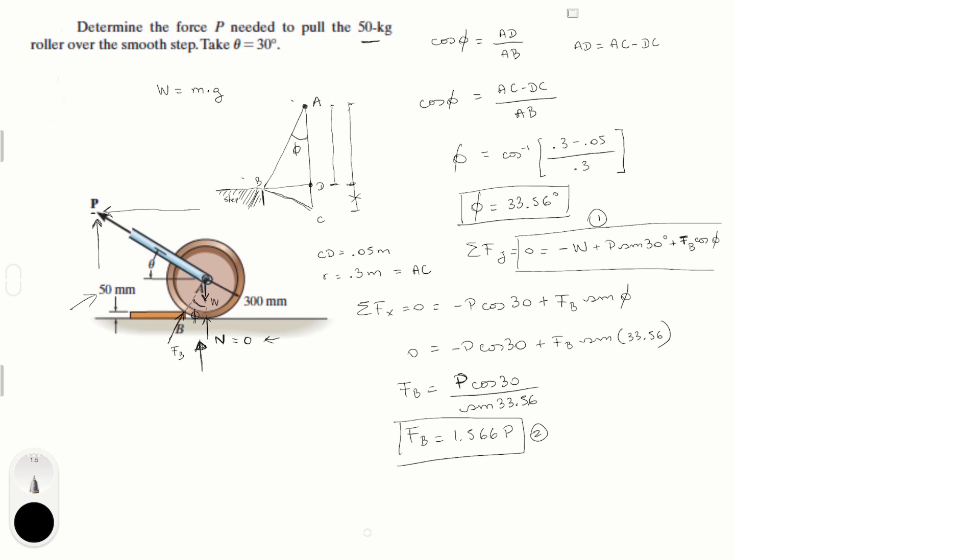This is pretty much it, because we can plug in equation 2 into equation 1. And for the weight, we know that it's the mass times the acceleration of gravity, which is 50 times 9.81, which is equal to 490.5 Newtons. So we plug that in for W. Then for F of B, we plug in 1.56 P.